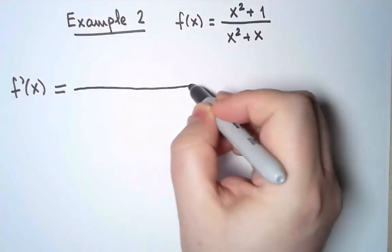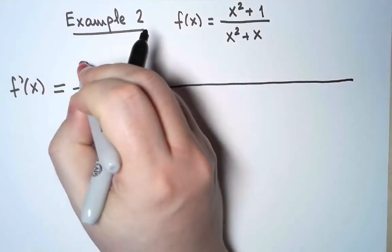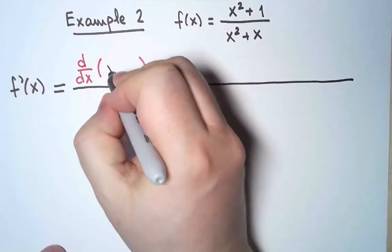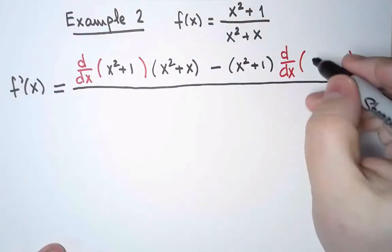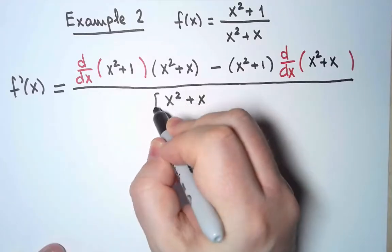The derivative of the quotient is derivative of numerator times denominator minus numerator times derivative of denominator, all of that over the denominator squared.